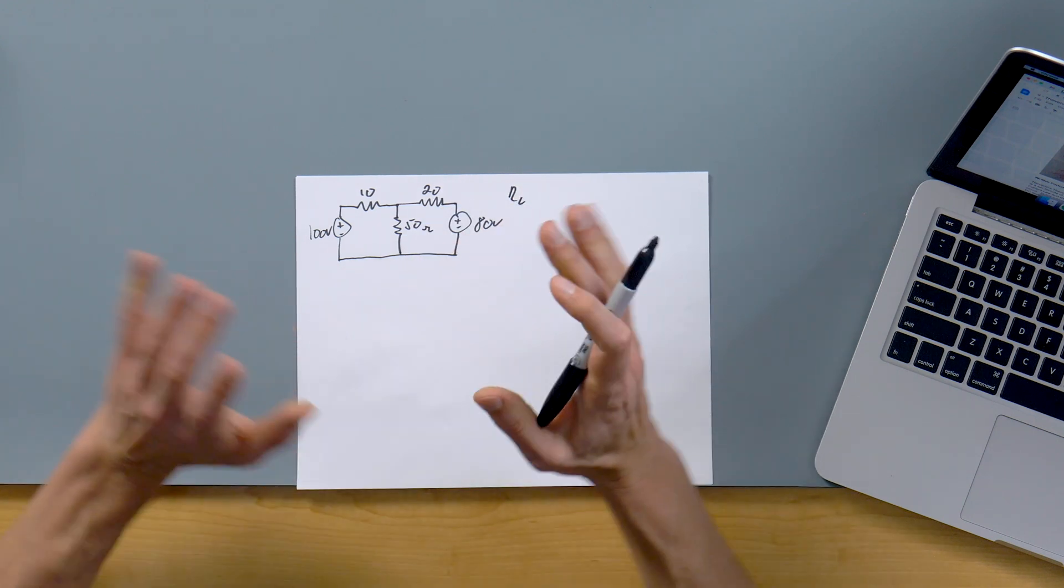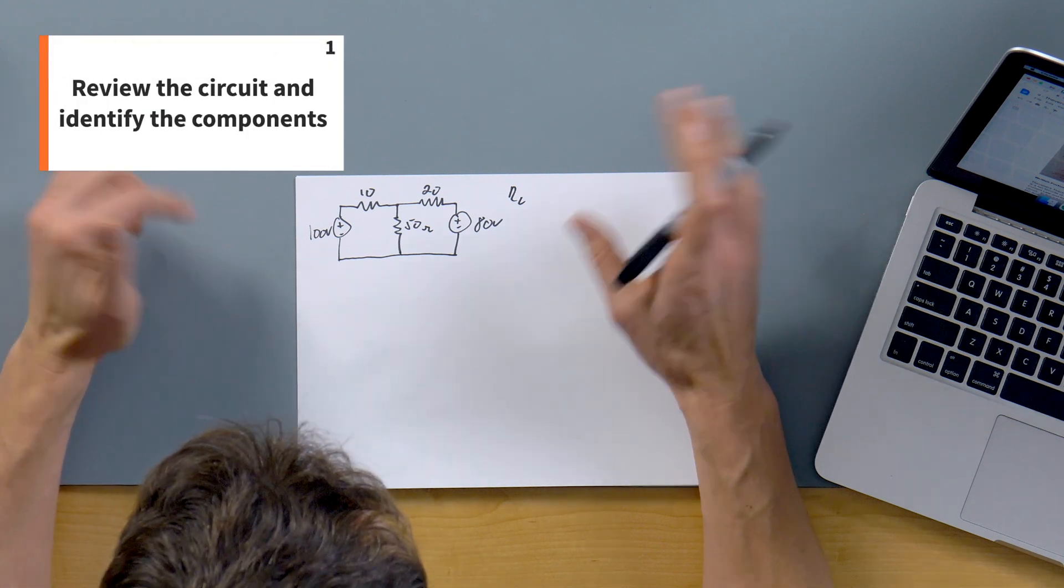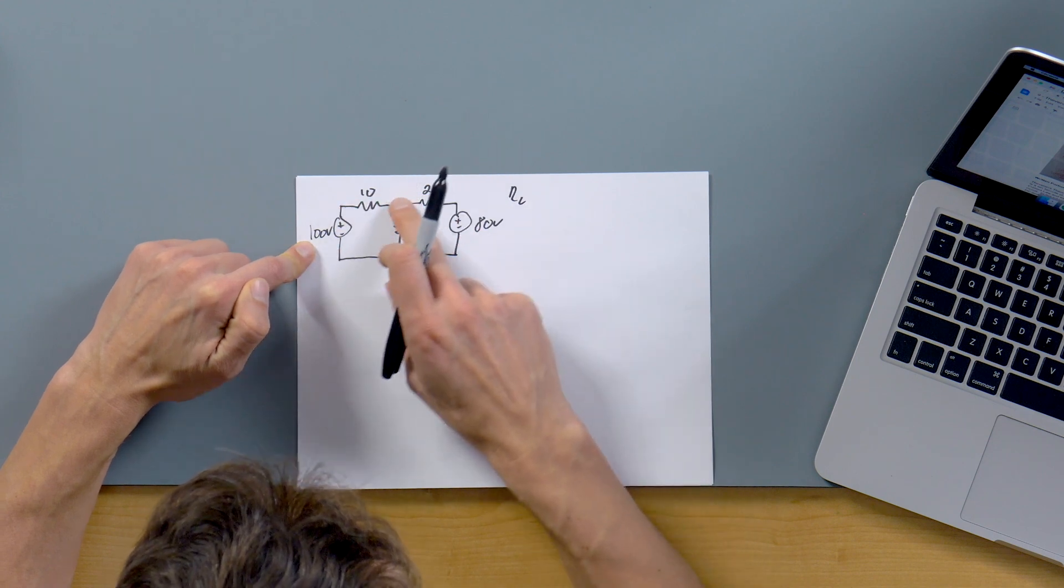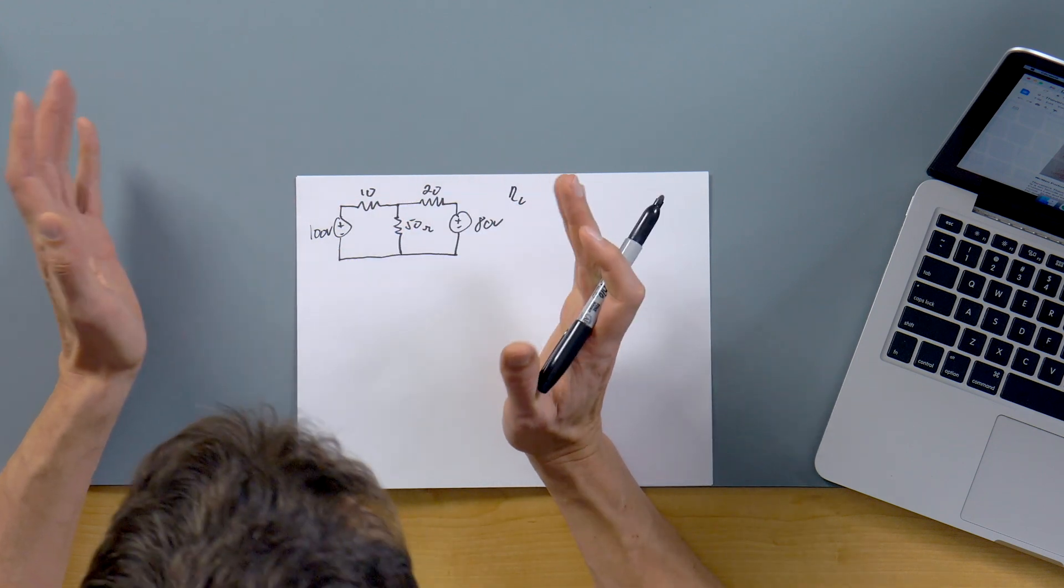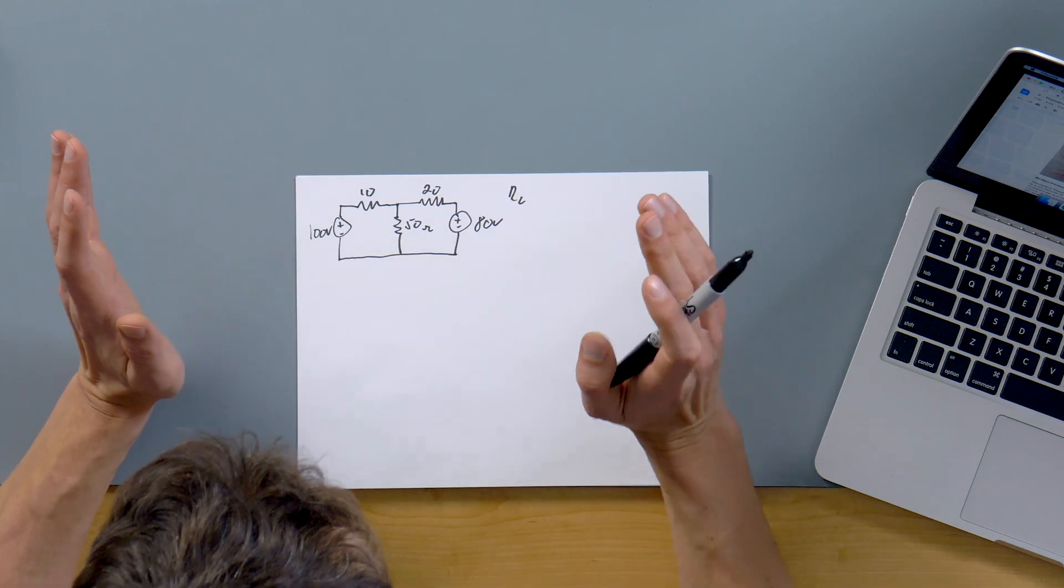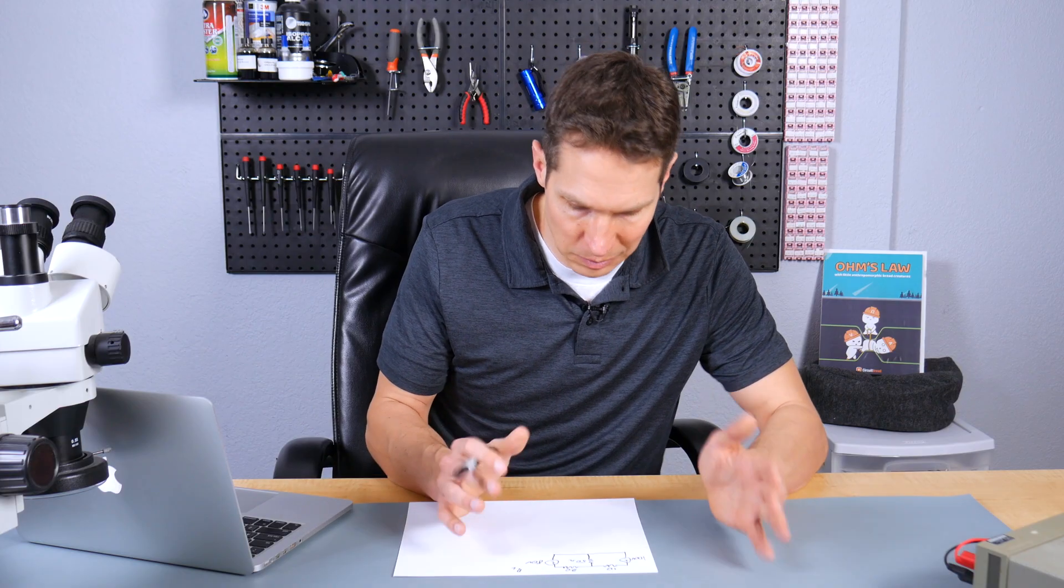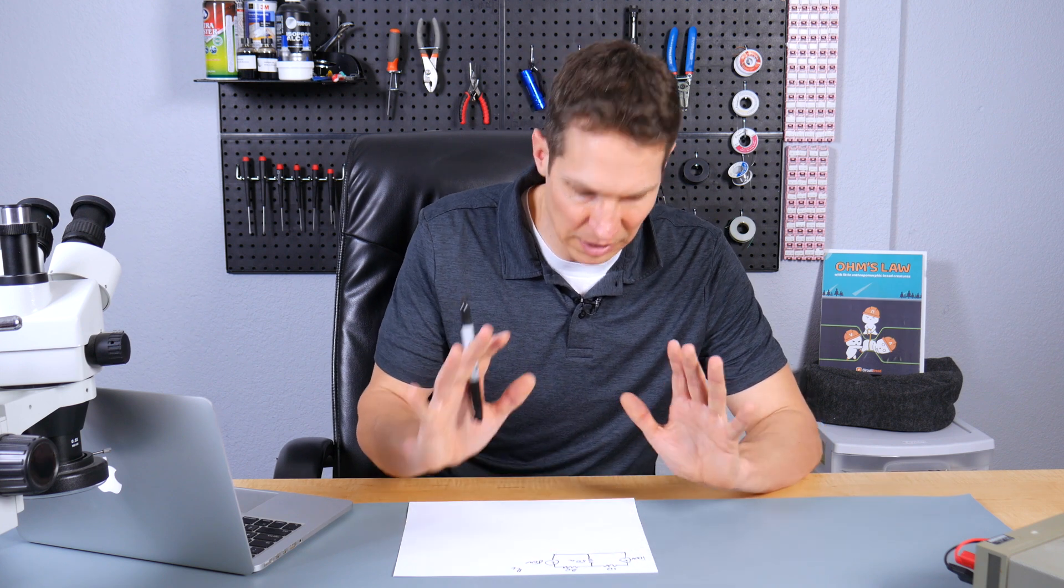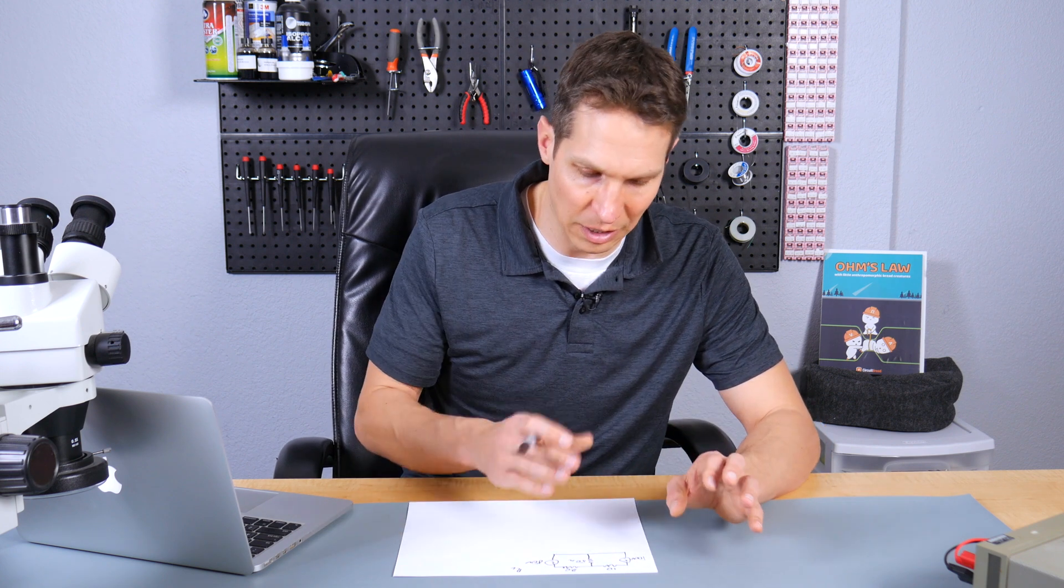So going through step number one, we look at it: 100 volts, 80 volts. Okay, so that's going to put this spot somewhere between 180 volts. That makes sense. 10 ohms, 20 ohms, 50 ohms. Okay, kind of expecting flow to work in here somewhere. I think I have a grasp on this. Good times. Let's go.